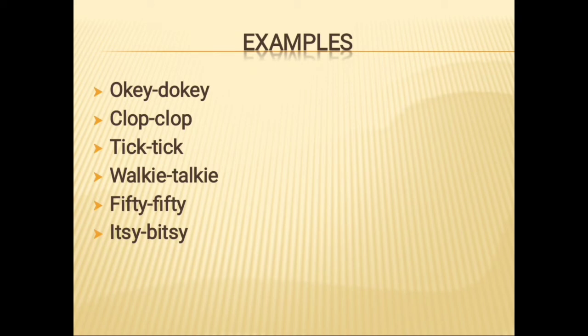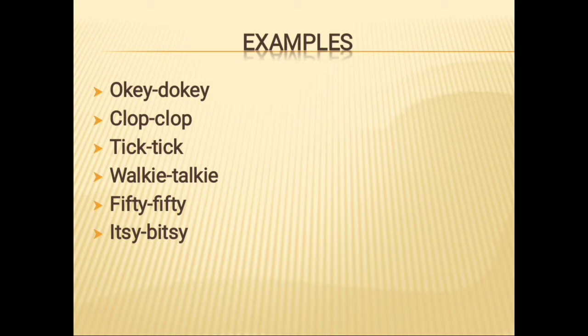Let's understand it by examples. The first example is 'okey-dokey,' and others include 'clop clop' and 'tick tick.' In 'clop clop' and 'tick tick,' no letters are changed — everything is repeated the same. In 'okey-dokey,' we have added the letter D at the start. Similarly, in 'walkie-talkie,' we added T at the start. Other examples include '50-50,' 'itsy-bitsy,' 'chit-chat,' and many others we'll discuss further.